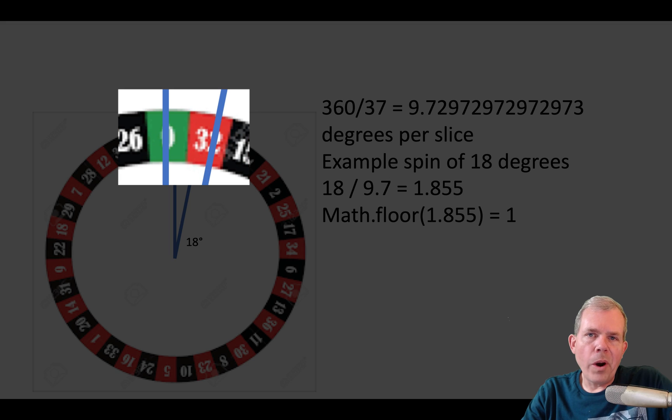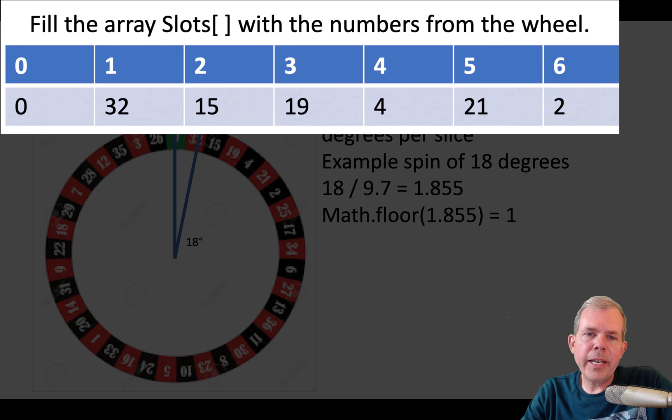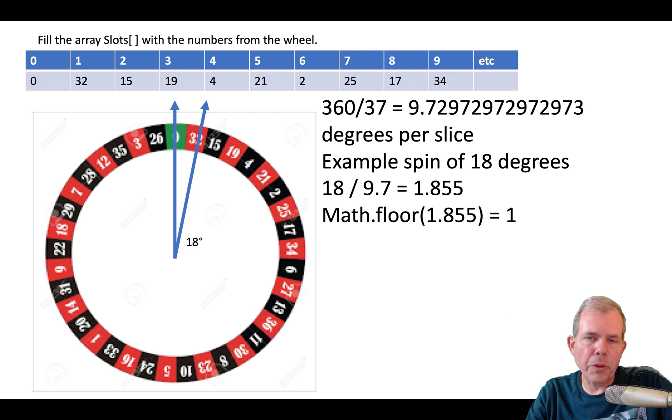But how do we know that 1 is actually represented as a red 32? Well, we could do that if we created an array. Let's say the top number of the array here is the index number of our array. So it starts at 0 and 1, 2, 3, and it goes up to 37.